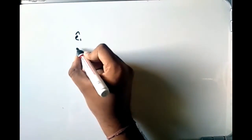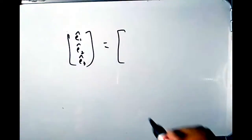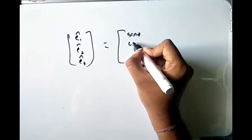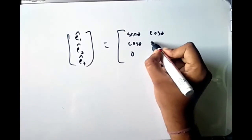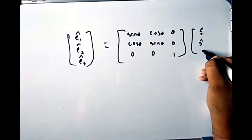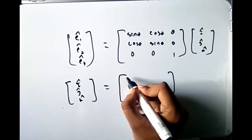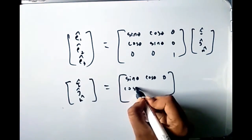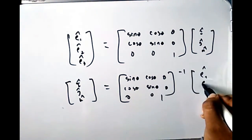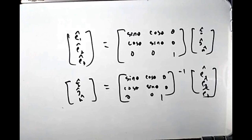We can write the relation between cylindrical unit vectors and Cartesian unit vectors in matrix form: (ê₁, ê₂, ê₃) = (sin θ, cos θ, 0; cos θ, −sin θ, 0; 0, 0, 1)(î, ĵ, k̂). To find î, ĵ, k̂ in cylindrical polar coordinates, simply take the inverse of this matrix. With h₁, h₂, h₃ known, the gradient, divergence, and curl expressions for cylindrical coordinates can be derived by substitution.